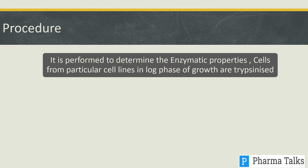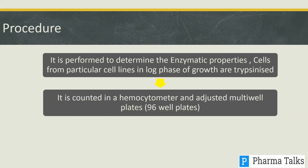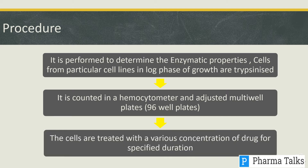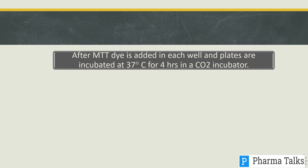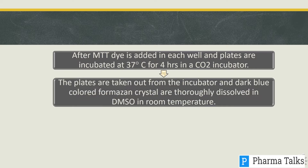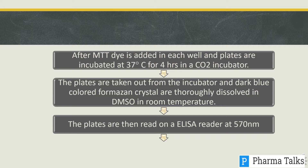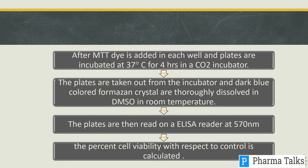The MTT assay is performed to determine the enzymatic properties of cells. Cells from particular cell lines in log phase of growth are trypsinized, counted in a hemocytometer, and adjusted in a 96-well plate. The cells are treated with various concentrations of drug for a specified duration. After MTT dye is added to each well, plates are incubated at 37°C for 4 hours in CO2. The plates are removed from the incubator and the dark blue formazan crystals are dissolved in DMSO. Plates are then read on the ELISA reader at 570 nm, and percent cell viability with respect to control is calculated.